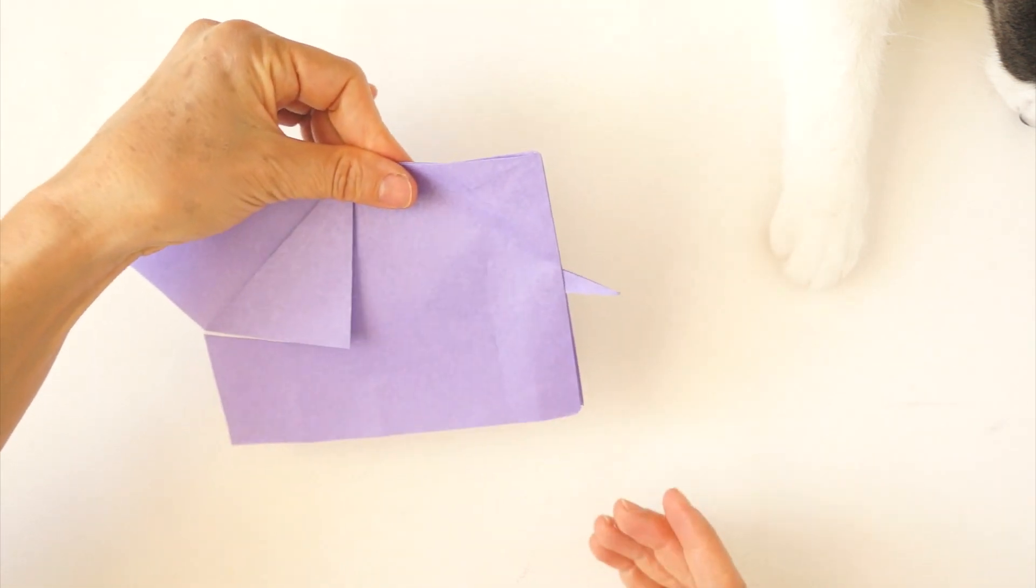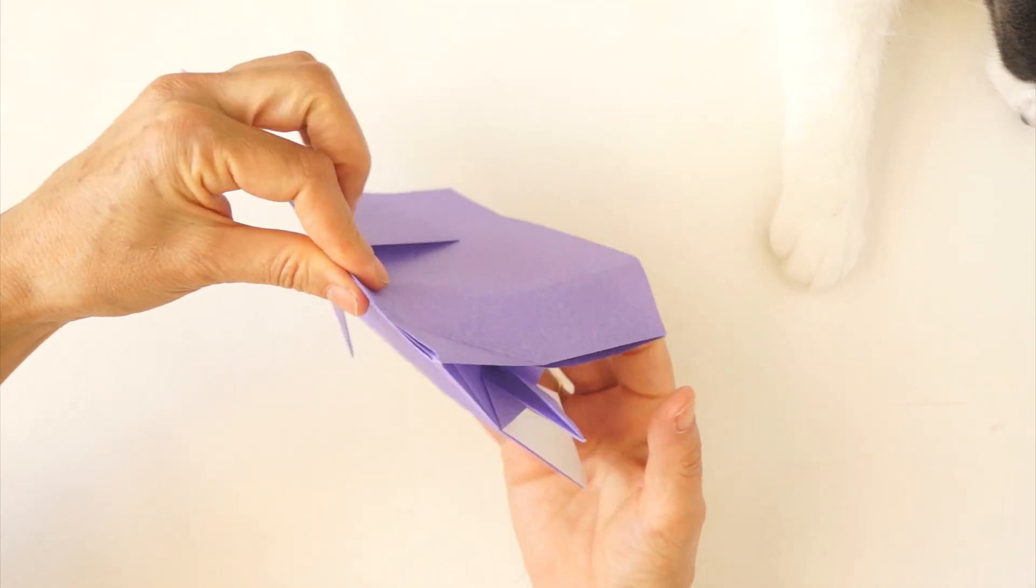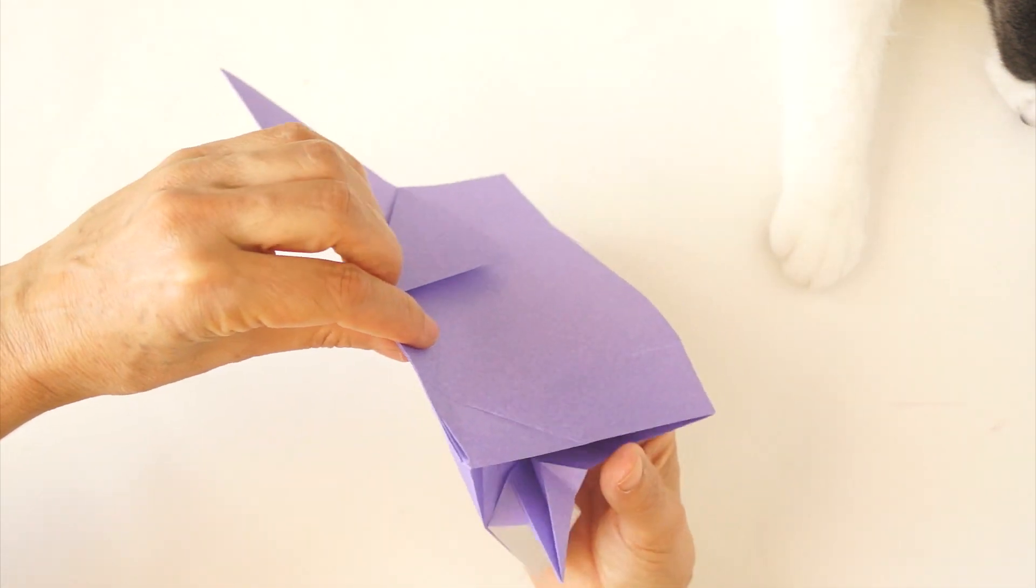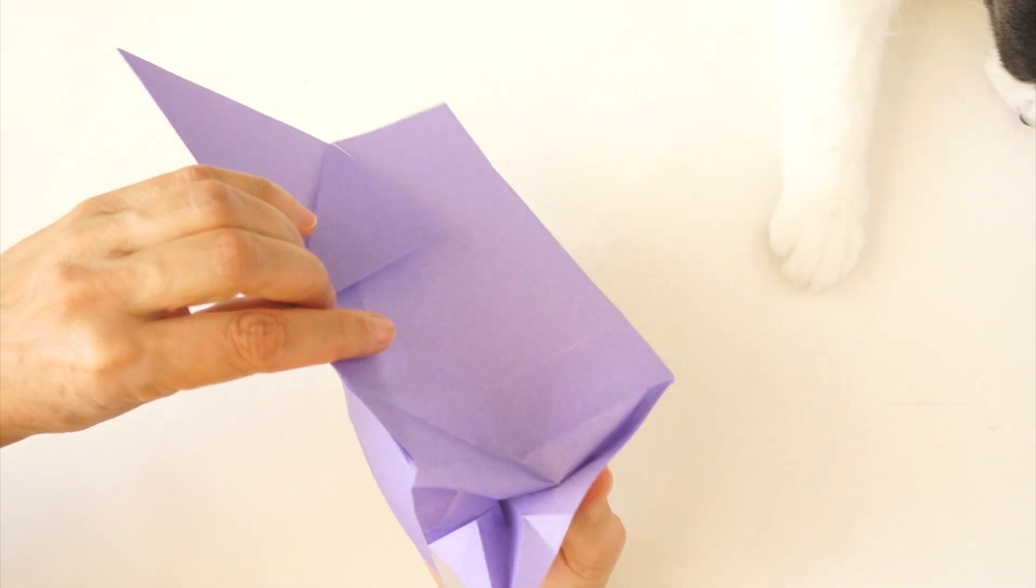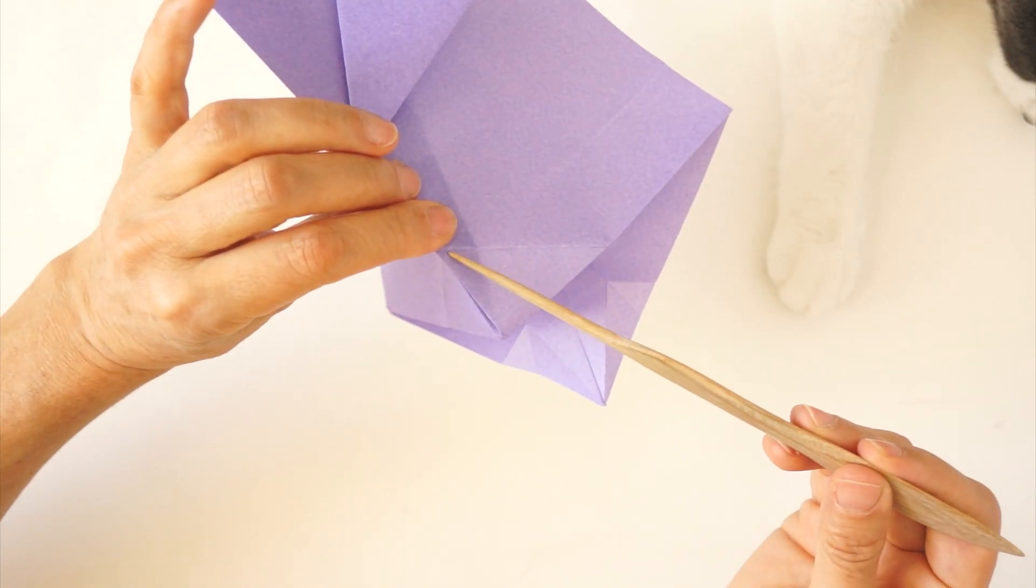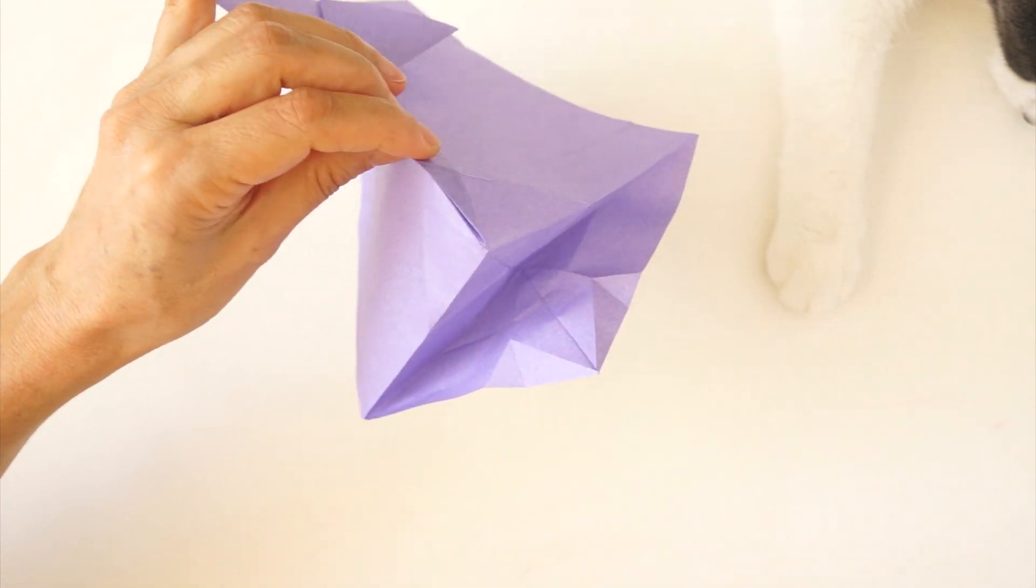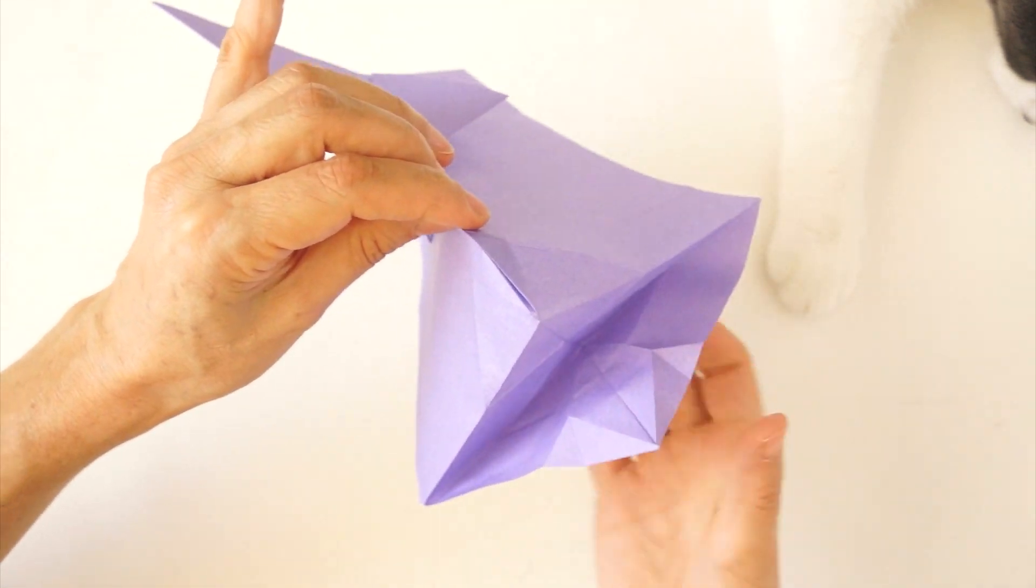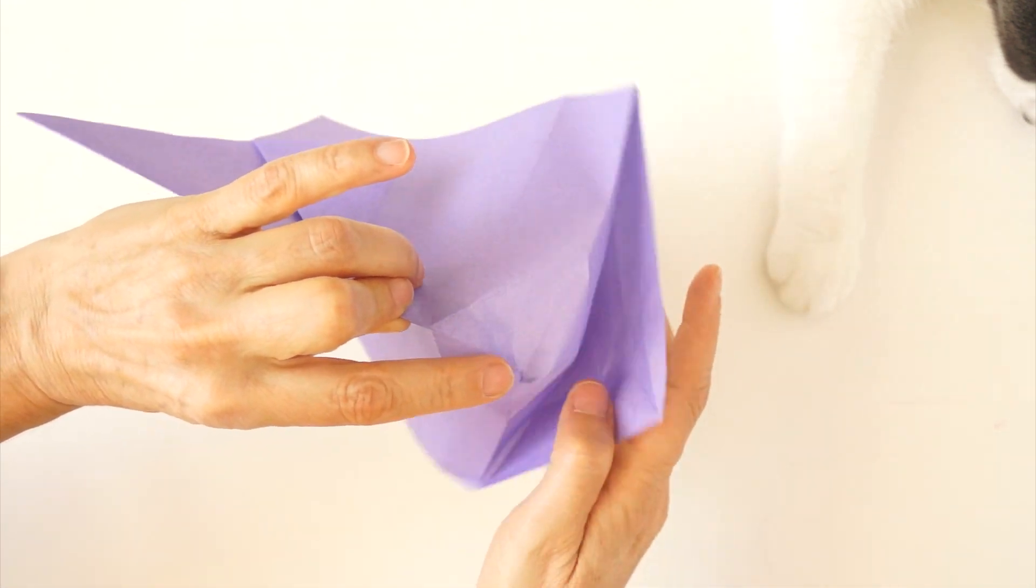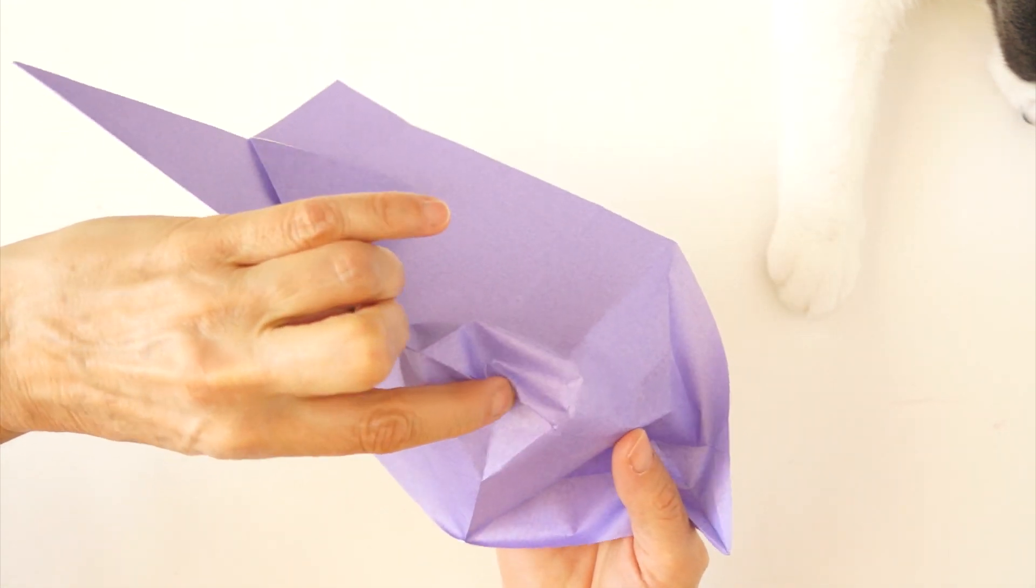We hold from the top. Open briefly. This might become undone but that's okay. Press from underneath. We locate the base of that pyramid made by this corner. And we are going to press this point in so that we sink. Have to be brave with the paper.